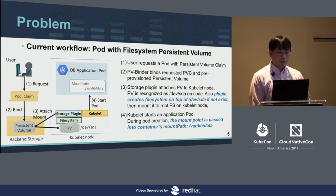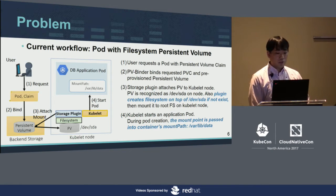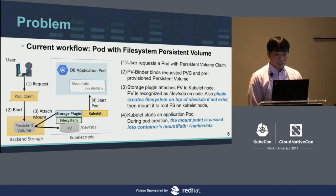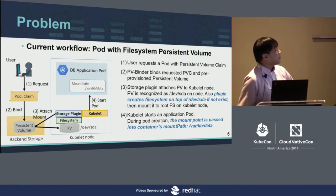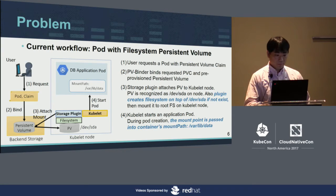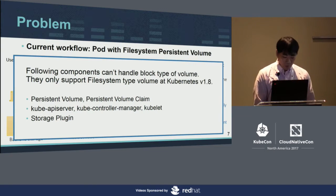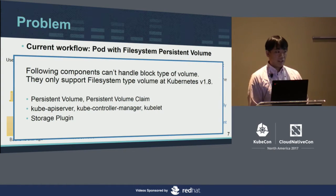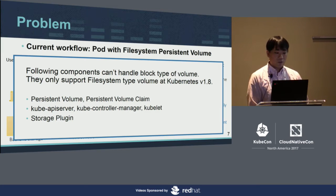The volume on /dev/sda is mounted to the root filesystem on the Kubernetes node. At step four, Kubernetes starts the application pod. During pod creation, the mount point is passed into the container as the mount path — in this case, /data. From inside the pod, the application can access the mount path to store DB application data. As you may notice, the core components — persistent volume, persistent volume claim, kube API server, kube controller manager, kubelet, and storage plugin — cannot handle a block type volume currently.